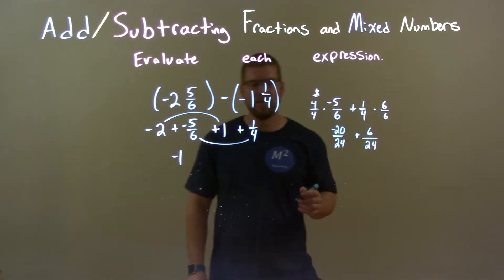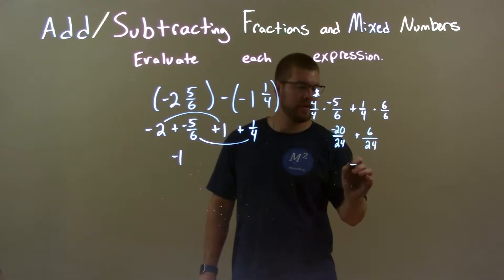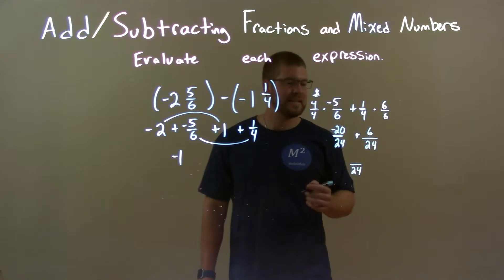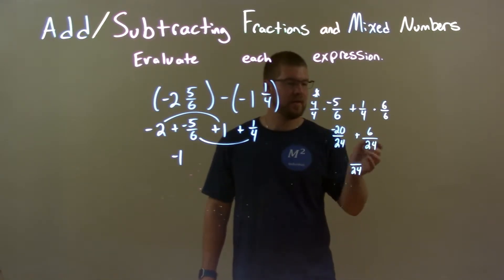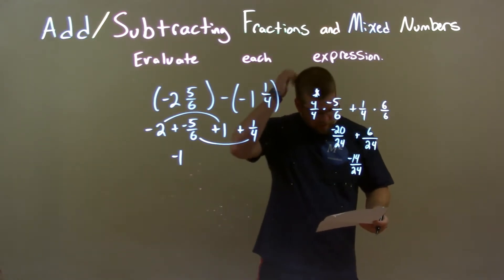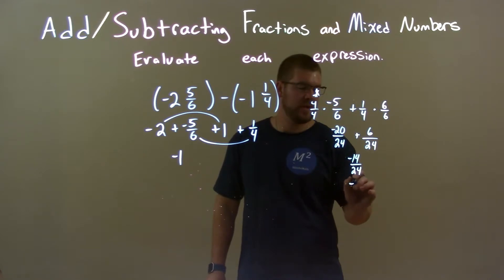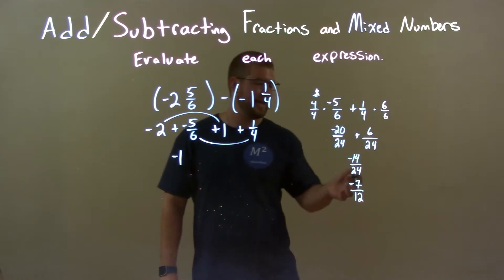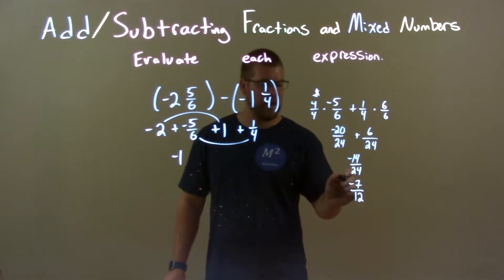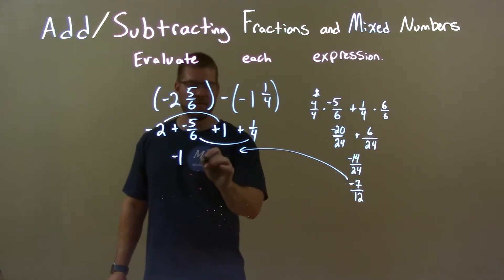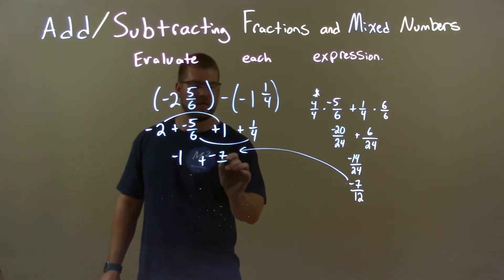Now, when we add these two numbers together, we keep the denominator the same — 24 — and for the numerator, negative 20 plus 6 is negative 14. So we have negative 14 over 24. Both of these numbers are divisible by 2, so negative 14 divided by 2 is negative 7, and 24 divided by 2 is 12. We cannot break this down anymore, so we have negative 7 over 12.